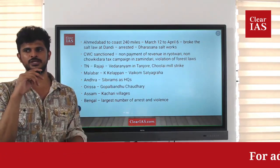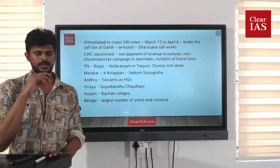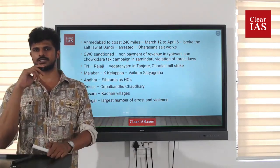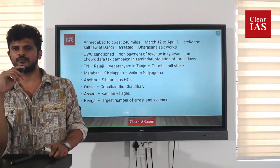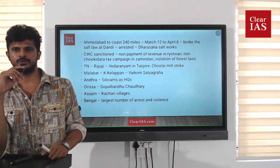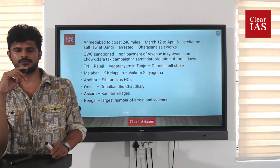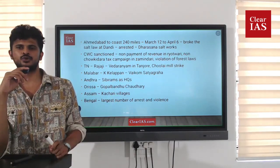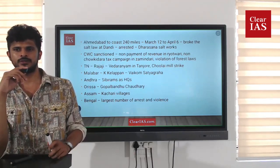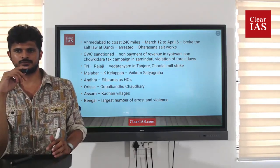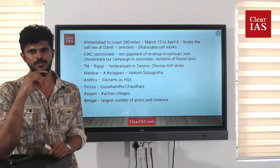The movement was initiated with the Salt March, also known as the Dandi March. Dandi is a coastal place in Gujarat. Gandhiji travelled by foot from Sabarmati to Dandi — 240 miles. He then made salt at the Dandi coast, breaking the law, as no one else was allowed to manufacture salt from the ocean; there was a British monopoly and all had to pay a tax on salt. This law was broken by Gandhiji at Dandi after the 240-mile march.